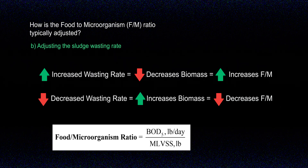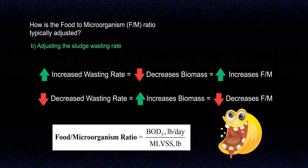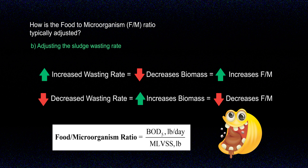It's important to understand that just because you increase or decrease your wasting rate, you may not get the results you want. Since you don't usually have control over what comes into your plant, you want to aim for staying within a range that works for your system rather than chasing a specific ratio. As a rule of thumb, you should not change your wasting rates more than 10 to 20 percent per day. Efficient and effective wastewater treatment is a moving target — make incremental adjustments and stay within a range, because what works one week may not work exactly the same the next.